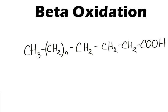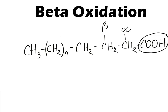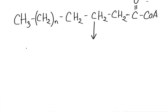Now let's see why it is called beta oxidation. This is a fatty acid molecule. We know that the carbon which is attached to the functional group is called the alpha carbon. In case of fatty acid, the functional group is the carboxyl group. The carbon which is adjacent to the alpha carbon is called beta carbon. For the beta oxidation process to occur, the fatty acid should be in the form of fatty acyl-CoA. This process is called beta oxidation because in this process the beta carbon of fatty acid is oxidized.